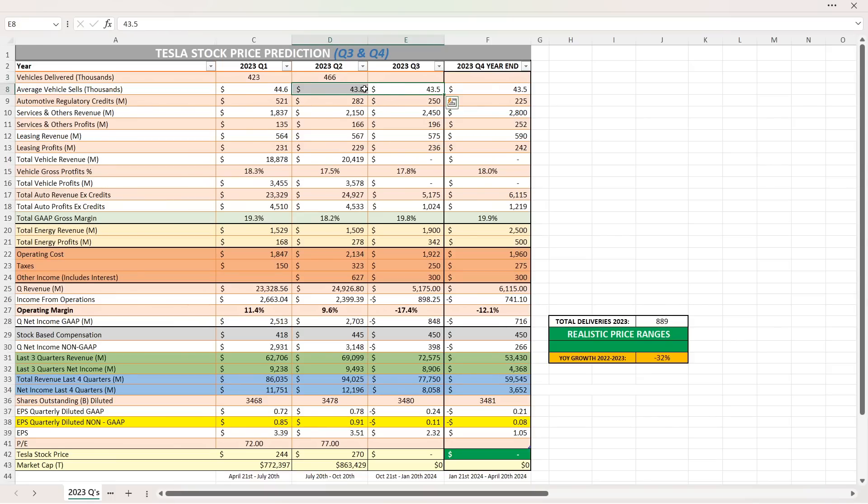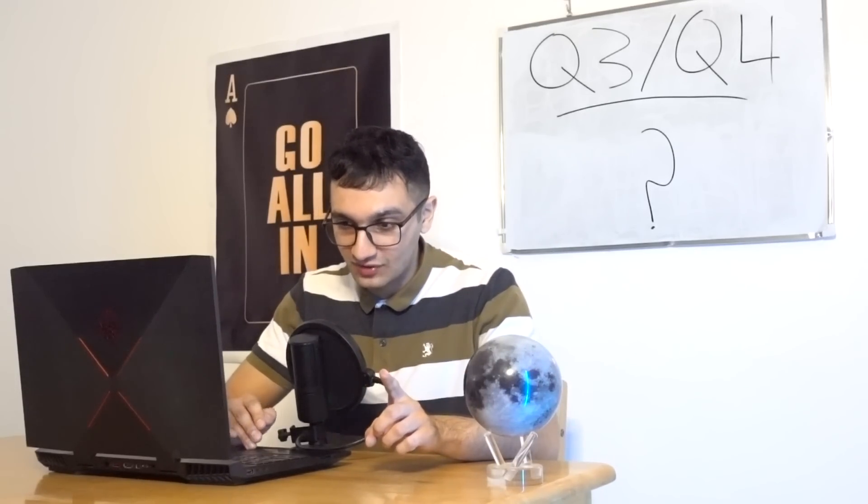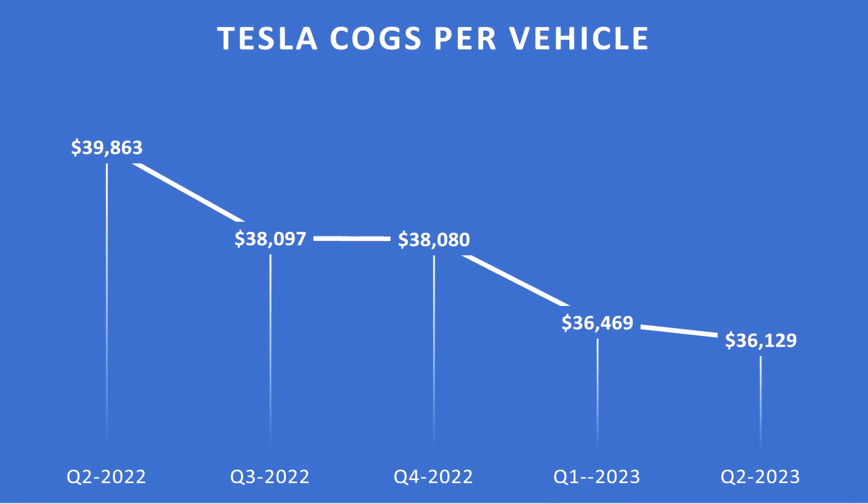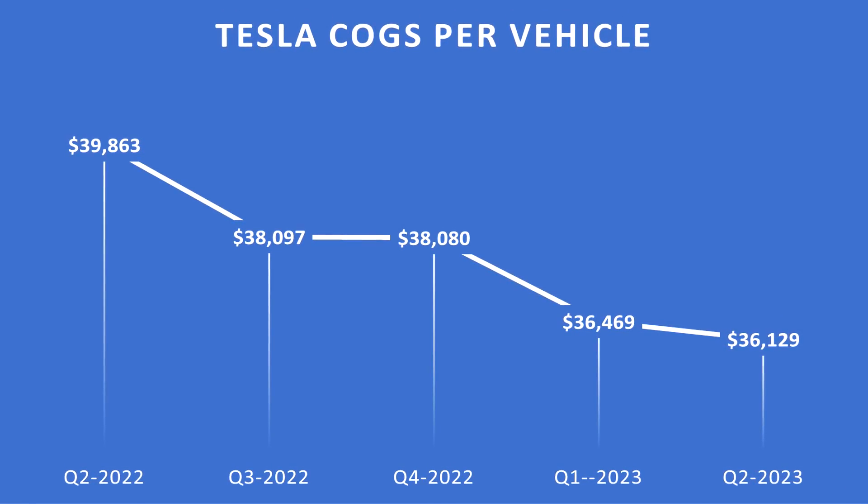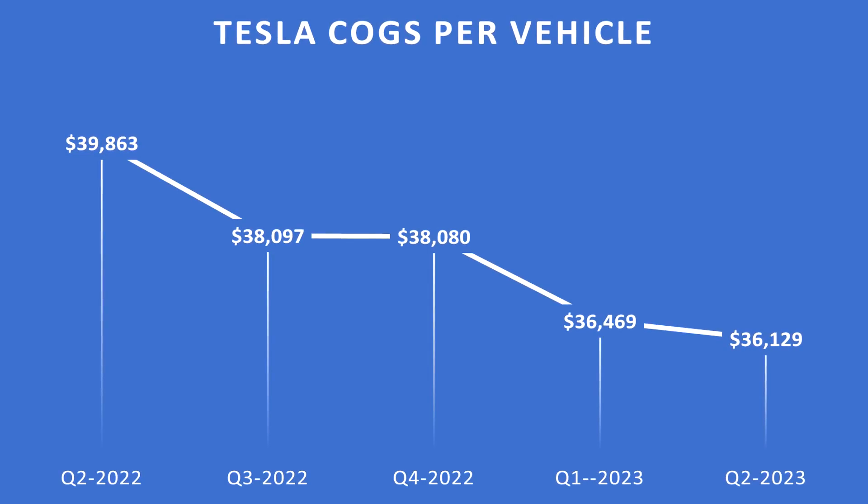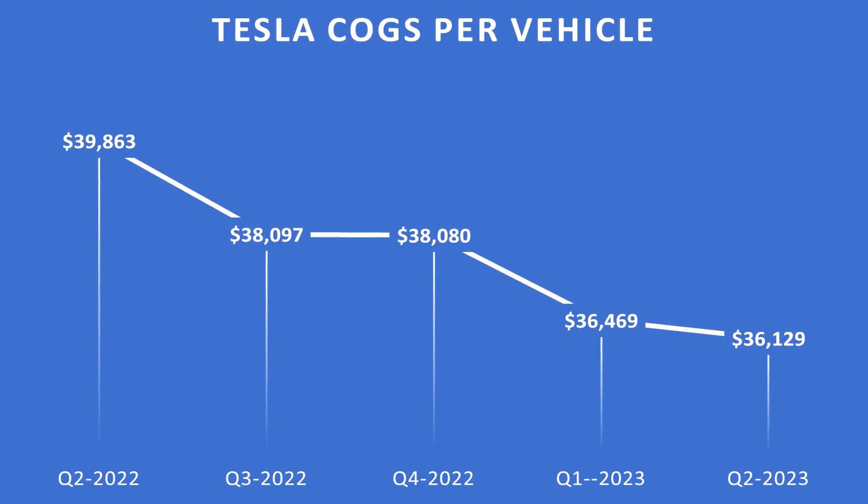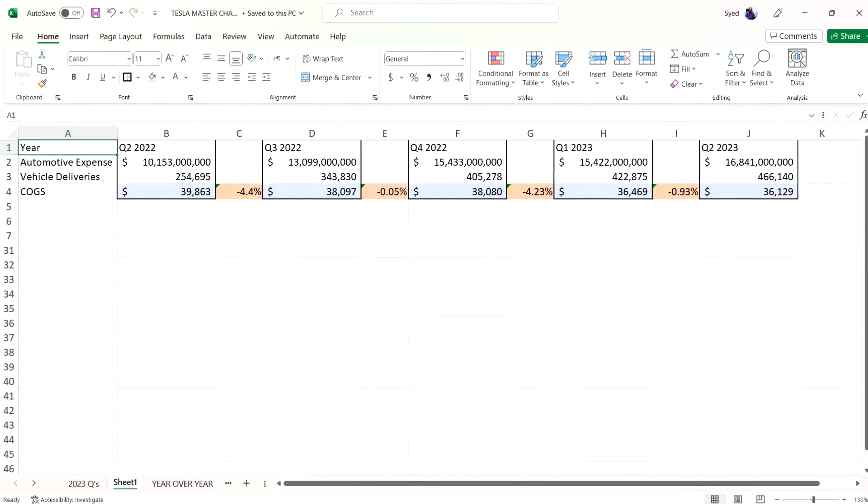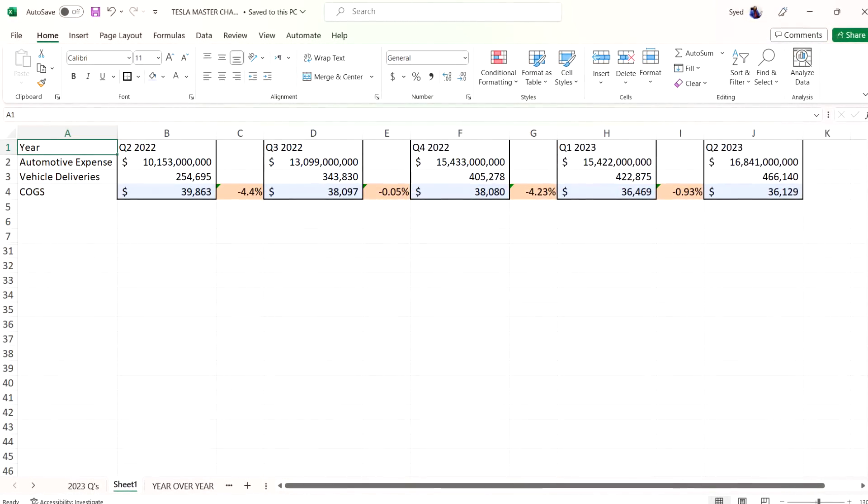I also reduced the average selling price to $43,500, credits to $50 million, services profits and revenue increased, leasing increased just a little bit. Gross margins I did increase to 17.8%, even though we are reducing prices. And the reason why I did that is because of this. Check out this chart, guys. This is automotive COGS.